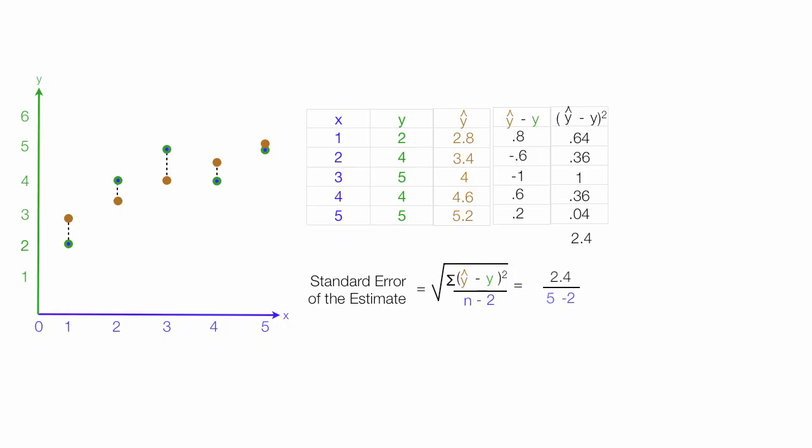There's 5 observations, so n is 5. So 5 minus 2. I take the square root of all this, which is equal to the square root of 2.4 divided by 3, which is equal to 0.8, the square root of 0.8, which is equal to 0.89. So the standard error of the estimate is equal to 0.89.